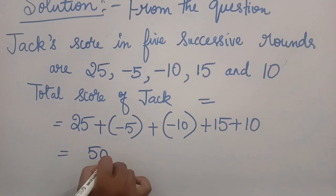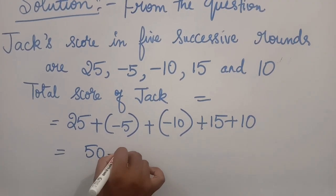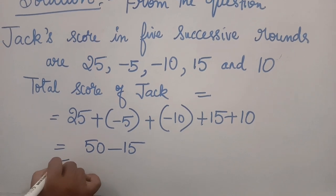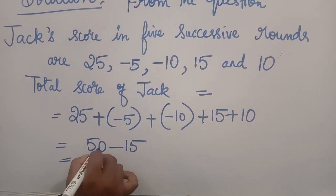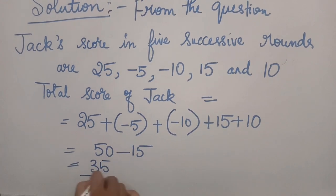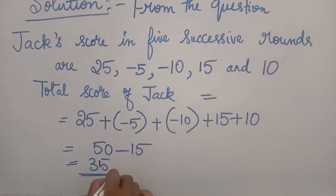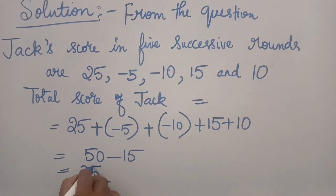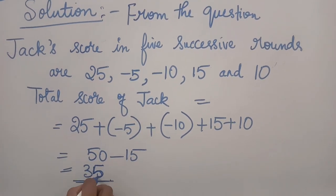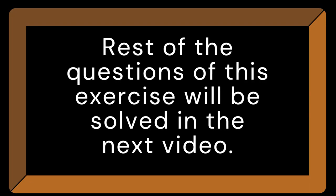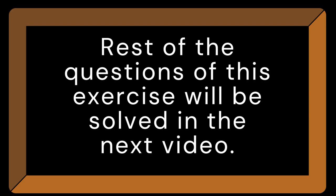50 minus 15 is 35. So the total score would be 35. Jack's score at the end of all 5 rounds would be 35. The rest of the questions of this exercise will be solved in the next video.